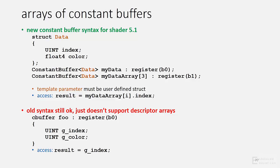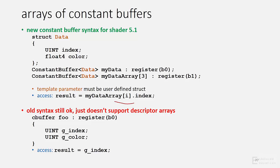In order for HLSL to support descriptor arrays of constant buffers, a new syntax is required in Shader Model 5.1. There's a ConstantBuffer type that's templatized with a user-defined struct, which allows the struct to be declared in an array. The ConstantBuffer type can even be used with non-arrays. Accessing the constant buffer array is as simple as a typical array index on the struct followed by the member. By contrast, the old constant buffer syntax is still supported, but it doesn't support arrays because every member of the constant buffer declaration was a global accessed directly.